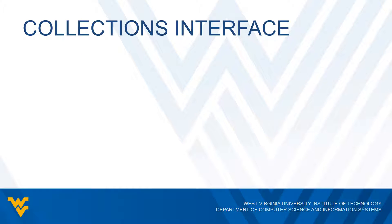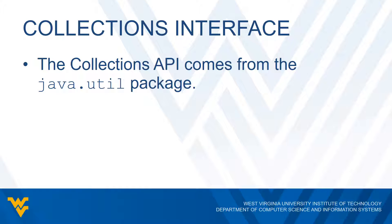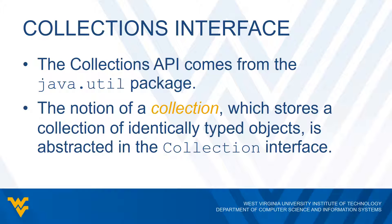Let's talk a little bit about the collection interface. The Collections API comes from the java.util package, so if we want to use the API we have to import java.util. We have this notion of a collection where we're basically storing a collection of identically typed objects, and this comes from the collection interface. The collection interface allows us to group identically typed objects — whether it's a collection of integers, doubles, strings, or objects of some class that we create.